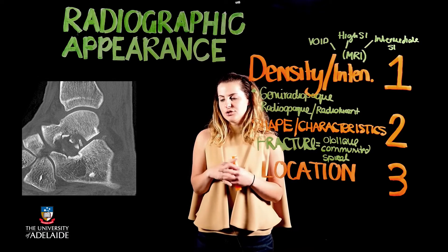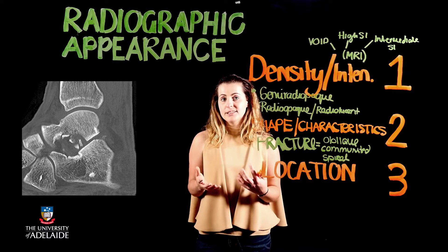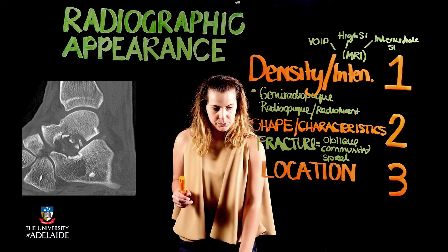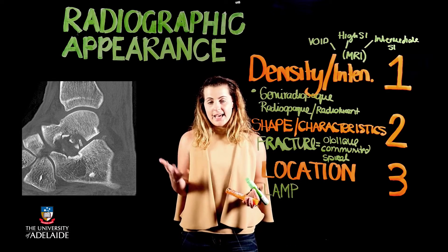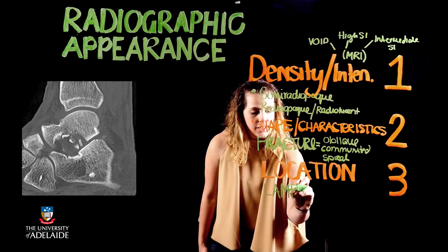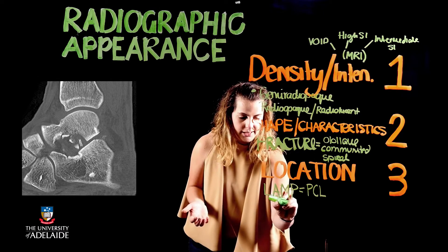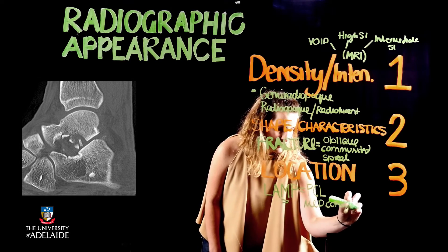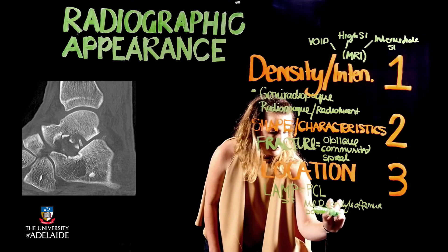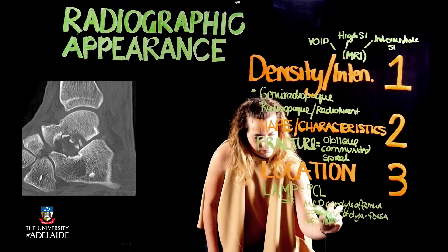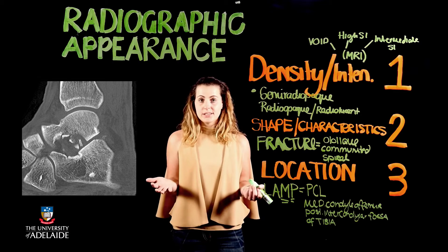When looking at soft tissue structures such as ligaments or tendons and their bony attachments, I expect you to specify attachment points. For example, referring to our acronym LAMP — which covers attachment points for the anterior and posterior cruciate ligaments — the posterior cruciate ligament attaches to the medial condyle of the femur as well as the posterior intercondylar fossa of the tibia. If asked to describe the location of the quadriceps femoris tendon, you should say it attaches to the patella or the tibial tuberosity.